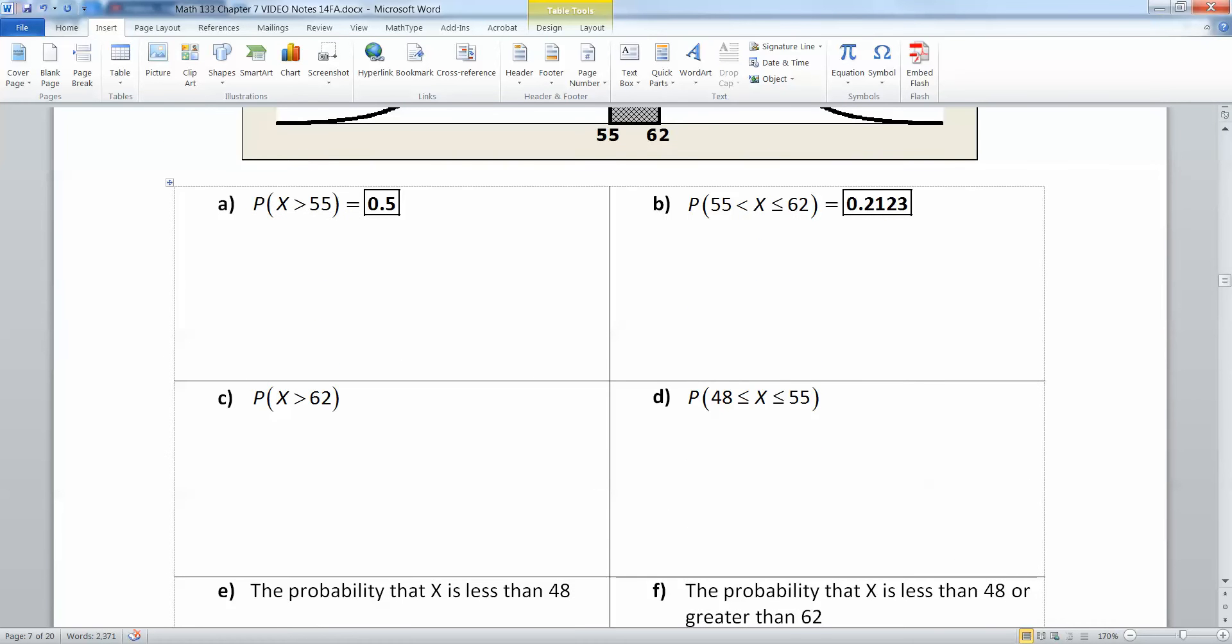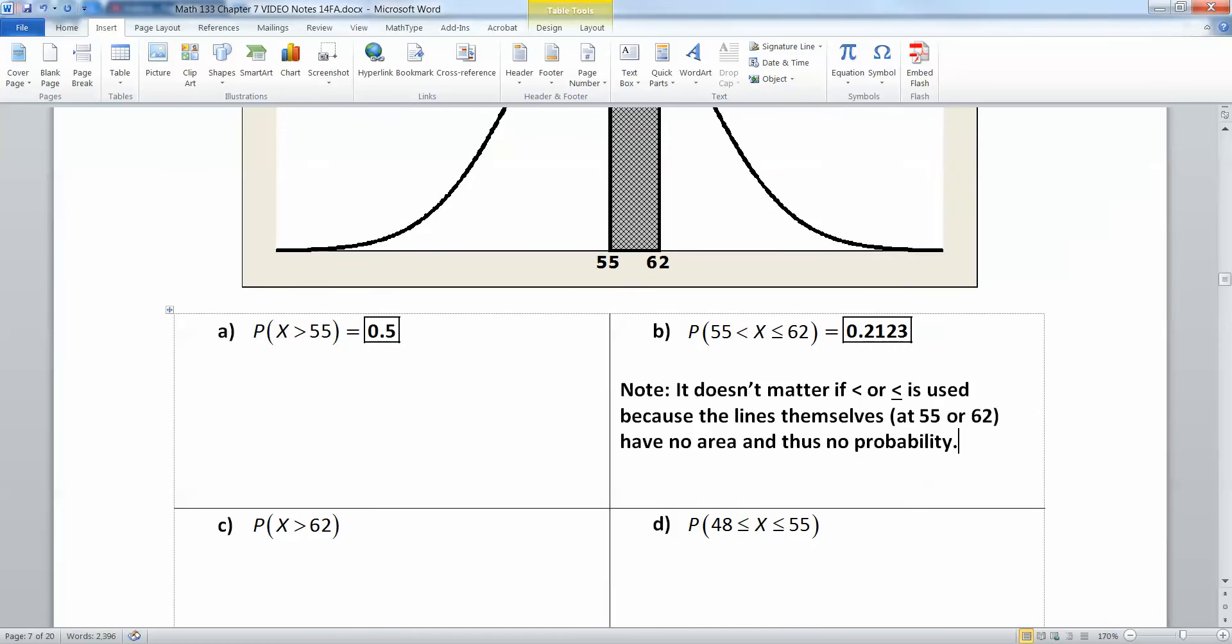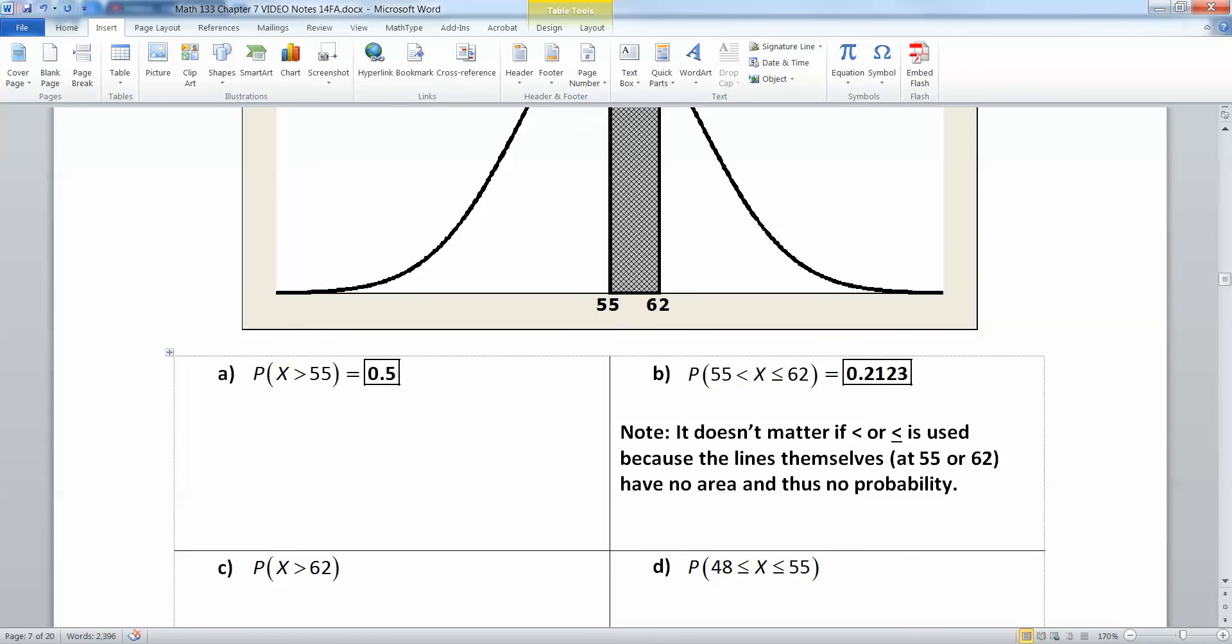That's why it doesn't matter whether I say less than or less than or equal to, it doesn't make any difference because the probability won't change because the equal to line has no area to it and thus no probability to contribute to the problem.